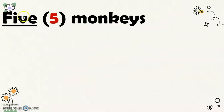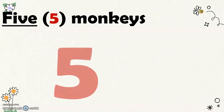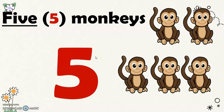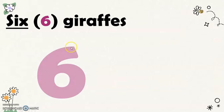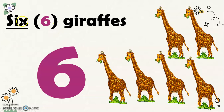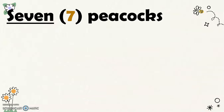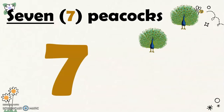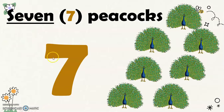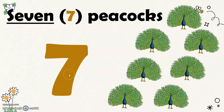Next, this is the number word for five and this is the number symbol for five, and there were five monkeys there. Next, there were six giraffes in the zoo. This is the number word for six and this is the number symbol for six. Next, there were seven peacocks in the zoo. This is the number word for seven and this is the number symbol for seven.